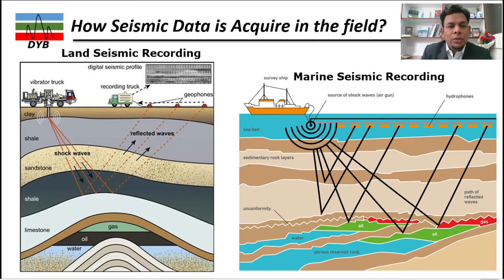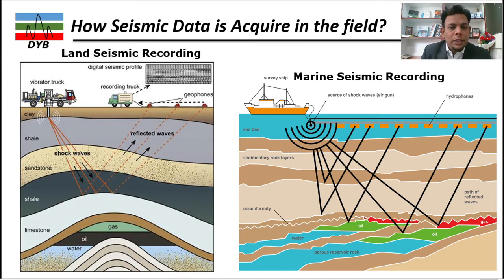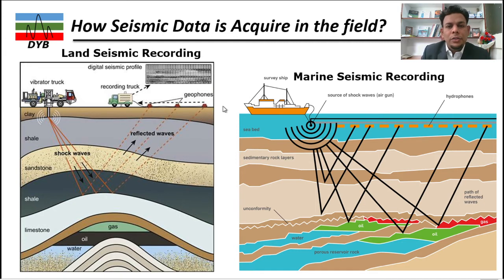In land acquisition, we normally use a vibroseis truck to produce the seismic waves. The vibrating plate produces seismic signals that travel through the subsurface and reflect from different rock materials. If you have different velocity and density contrasts between layers, you get a reflection; between rocks with no contrast, there is no reflection. Once the wave reflects back, it is recorded at the geophone. Multiple hundreds of geophones are active, recording all the subsurface information and sending it to the recording truck — that output is the seismic data.